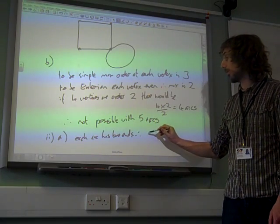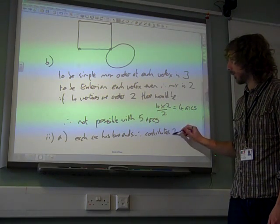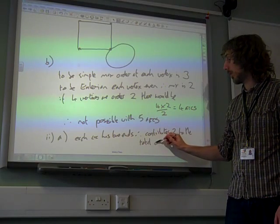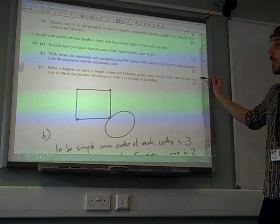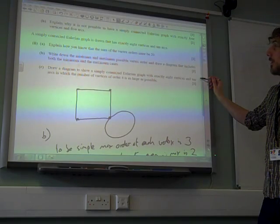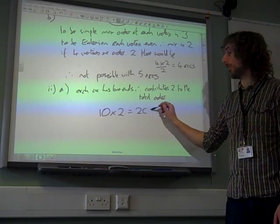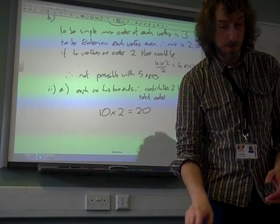Therefore, it contributes two to the total of all the orders. And so what we've got is we've got eight vertices and ten arcs. Ten arcs times by two, because it's 20 as our total. So that's got that bit done.